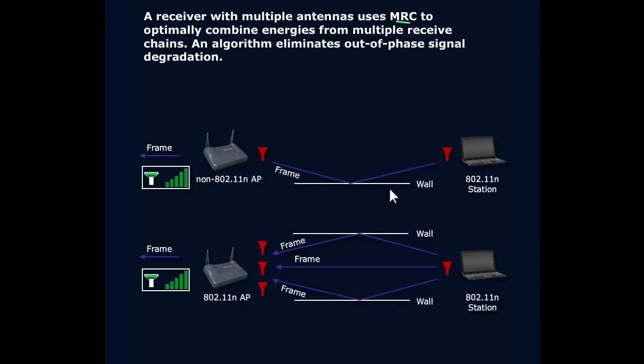MRC is associated with the ability for an 802.11n access point to have multiple receiving antennas that can analyze incoming signal, even if it's being transmitted just from one antenna.